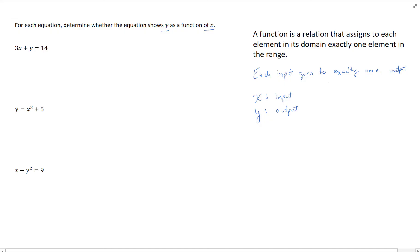Looking at the first equation, we have 3x + y = 14. I can rewrite this as y = -3x + 14 by subtracting 3x from both sides.